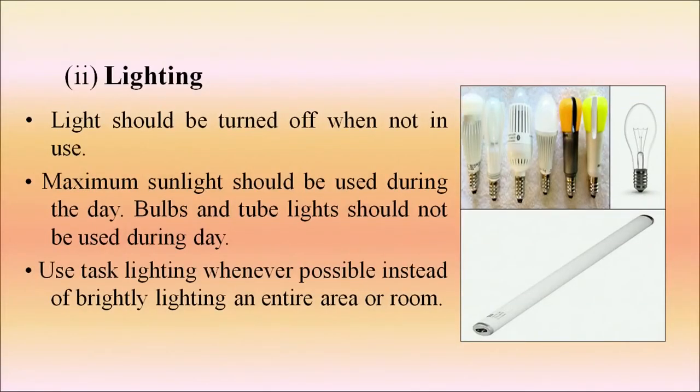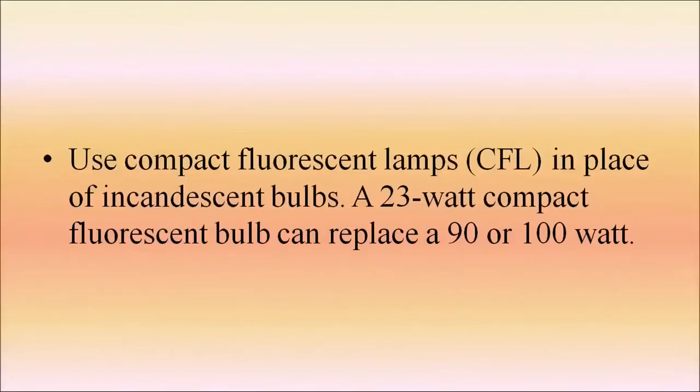With increasing energy demand worldwide and ever-increasing energy prices, there is justifiable reason to improve the energy efficiency of all energy-intensive technologies. For lighting: lights should be turned off when not in use. Maximum sunlight should be used during the day. Bulbs and tube lights should not be used during daylight hours. Use task lighting whenever possible instead of brightly lighting an entire room. Use compact fluorescent lamps (CFL) in place of incandescent or tungsten bulbs. Use dim lights in galleries, lobbies, and balconies.